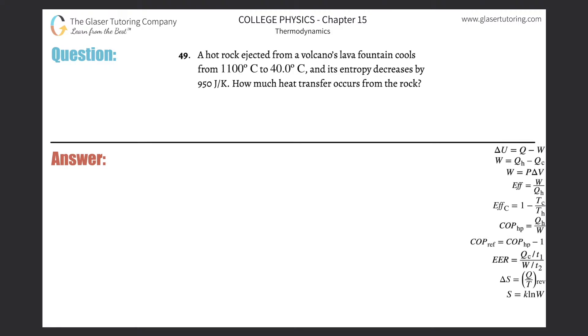Number 49: A hot rock ejected from a volcano's lava fountain cools from 1100 degrees Celsius to 40 degrees Celsius, and its entropy decreases by 950 joules per Kelvin. How much heat transfer occurs from the rock? This one's fairly similar to number 48, so you can check that one out.